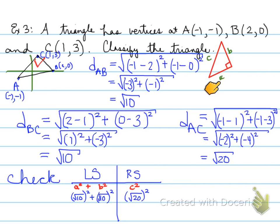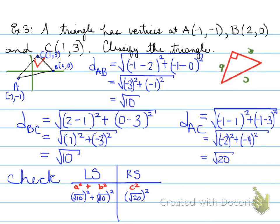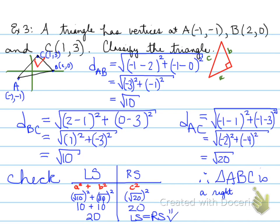No matter how I draw or rotate that triangle, the right angle mark always points to the hypotenuse. When we plug in the values, left side equals right side — confirmed. It is a right isosceles triangle. This is true because AB equals BC, and AB is perpendicular to BC.